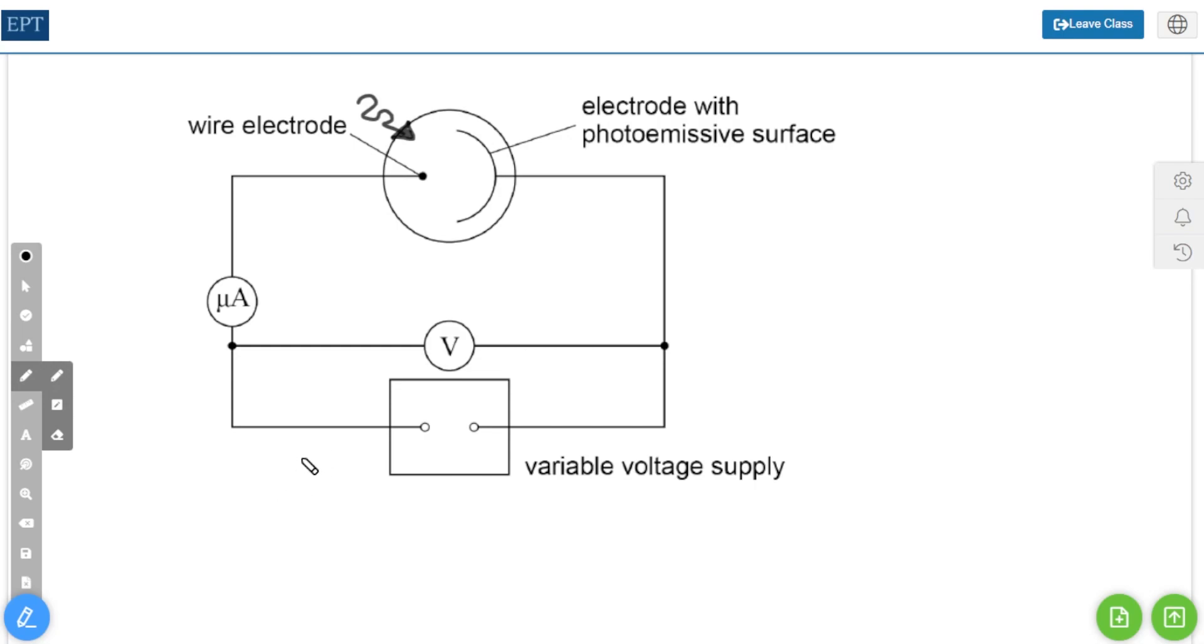Now I have removed the switch and we are going to assume that this terminal is positive and this one is negative. That means our wire electrode up the top there is going to be positive too.